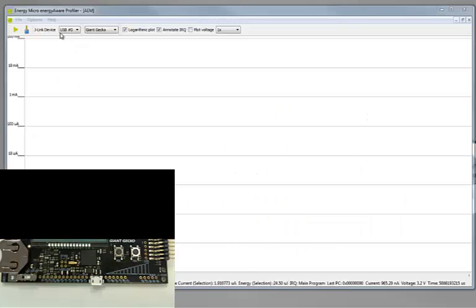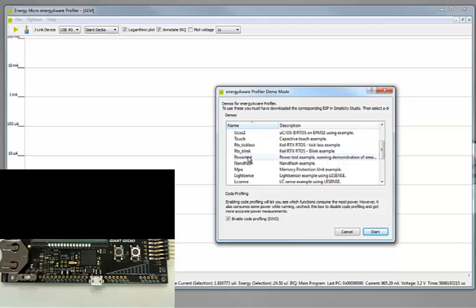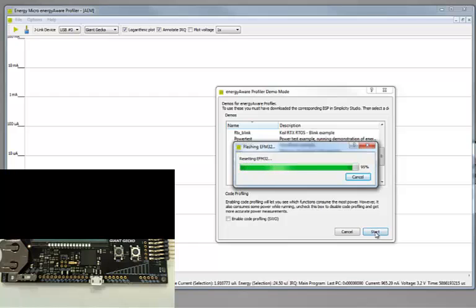Now, we will see a live demonstration of the metal sensor using LeSense. We will open the LC sense example in the energy aware profiler.